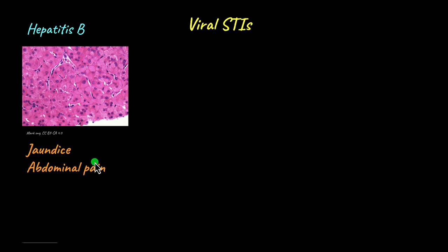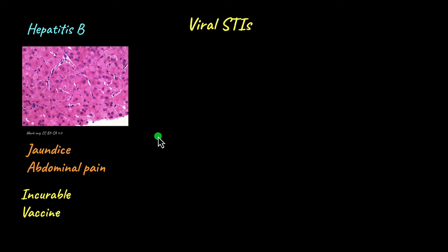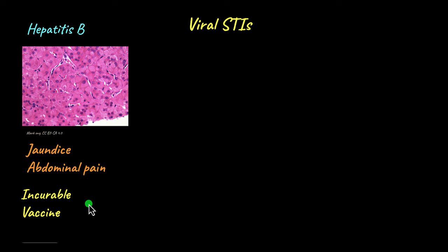There can be mild abdominal pain as well. As the infection becomes chronic, it can lead to cirrhosis of the liver and even liver cancer. Hepatitis B has a vaccine to prevent transmission even though it is incurable — viral STIs currently have no proper cure. The vaccine is usually administered in childhood. Similarly, the human papillomavirus (HPV) can also be prevented by a vaccine specifically designed for women, as HPV infection can lead to cervical cancer.